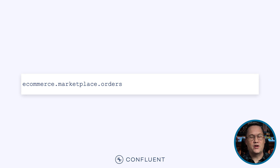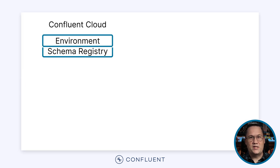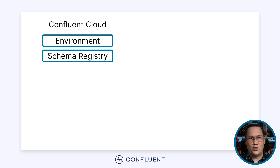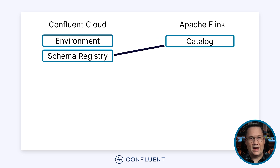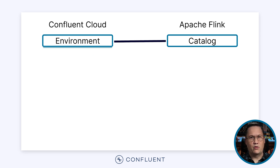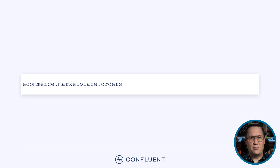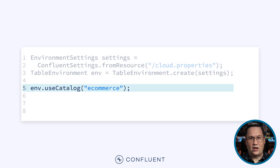Thankfully, Confluent Cloud automates a lot of this. It groups related resources under something called an environment. This includes a schema registry that contains metadata about your Kafka topics — essentially, it acts as a catalog for your resources. As such, Confluent Cloud maps the schema registry to a corresponding Flink catalog. However, the environment name is used to identify the catalog, so we often refer to the environment rather than the schema registry. In this example, the e-commerce catalog would map to the e-commerce environment in Confluent Cloud. To set the default catalog in the Table API, we can execute a Use Catalog statement. Because Confluent Cloud has already defined the catalog for us, we don't need any additional code.